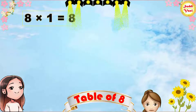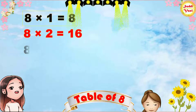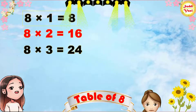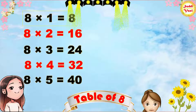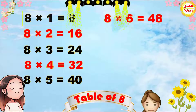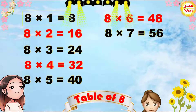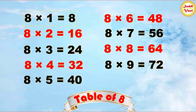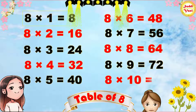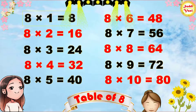8 1s are 8, 8 2s are 16, 8 3s are 24, 8 4s are 32, 8 5s are 40, 8 6s are 48, 8 7s are 56, 8 8s are 64, 8 9s are 72, 8 10s are 80.